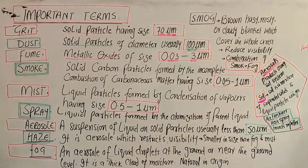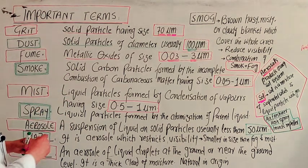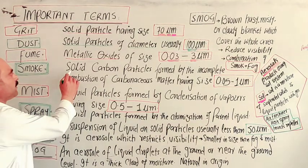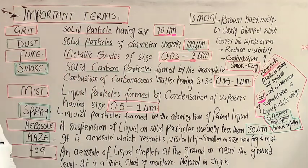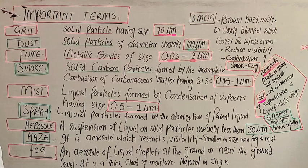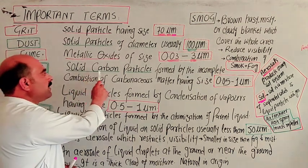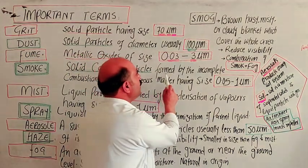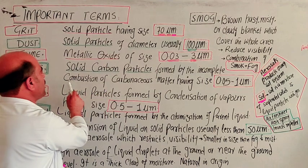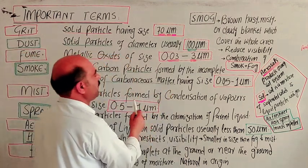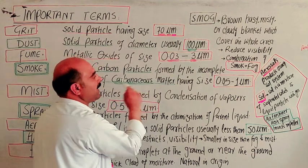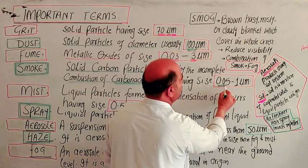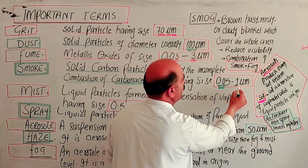Smoke is actually solid carbon particles. The carbon particles are formed by the incomplete combustion of carbonaceous matter. It is called carbonaceous matter, having size 0.05 to 1 micrometer.